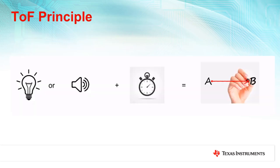For those of you unfamiliar with the principle of time-of-flight, it is simply using a reference medium, such as light or sound, and measuring the time it takes for the medium to travel between the transmitter and the target object. Since the speed at which light or sound travels through air is constant, we can determine the distance to an object.